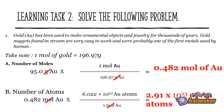Learning task 2: gold has been used to make ornamental objects and jewelry for thousands of years. Gold nuggets found in streams are very easy to work and were probably one of the first metals used by humans. Take note: in solving the number of moles, remember that 1 mole of gold is 196.97 grams. In solving the number of atoms, use the computed number of moles. Answer: 2.91 × 10²³ gold atoms.